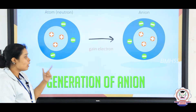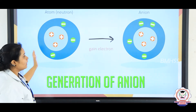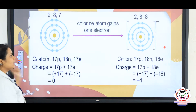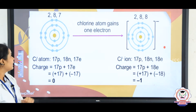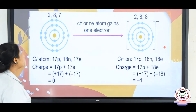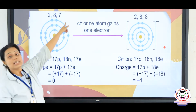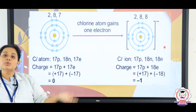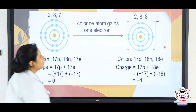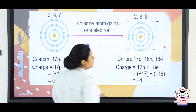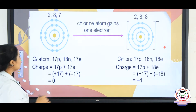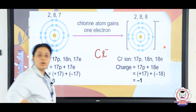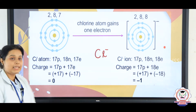If you want to talk about anions, there is addition of an electron. The first example is chlorine. Chlorine is having 7 electrons in the outer shell. We can add 1 electron so that it comes to the configuration of argon, and therefore the chloride ion will become Cl minus.